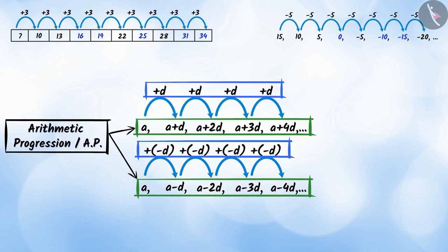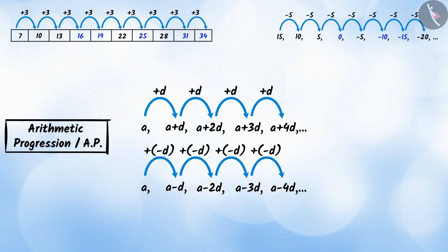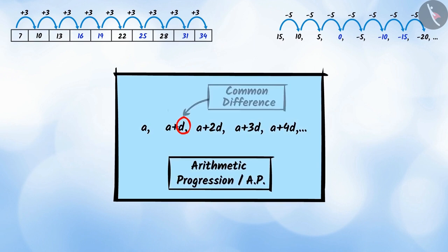And the fixed number that is added is called the common difference of the arithmetic progression, which we represent by the letter D.